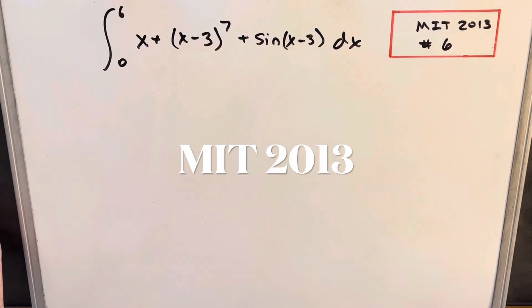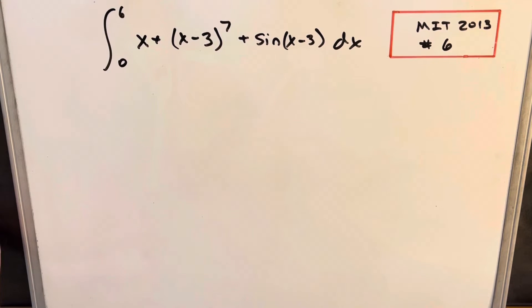Okay, we have another integral here today from MIT Integration B 2013. This was problem 6. We have the integral from 0 to 6 of x plus (x minus 3) to the 7th plus sine(x minus 3) dx.